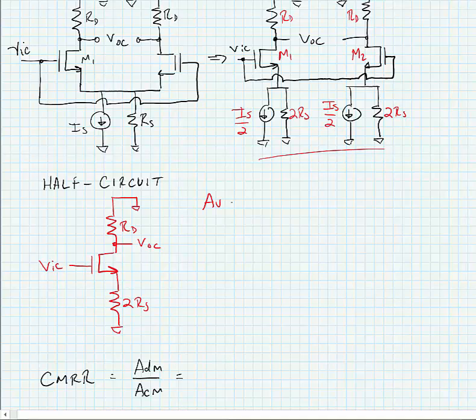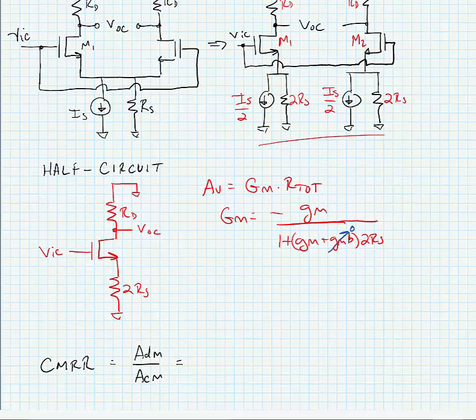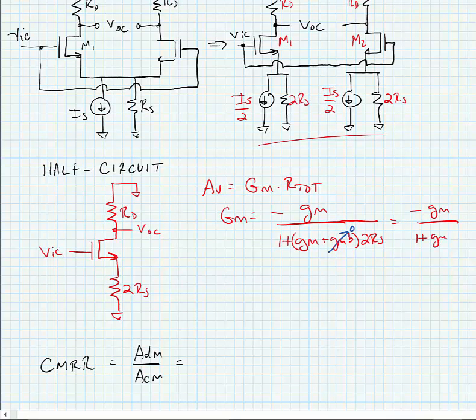Now we know that our voltage gain is equal to big GM times our total RTOT and we know that big GM in this case is equal to minus gm divided by one plus gm plus gmb times RS. We're going to ignore the gmb term here, so we're simply left with minus gm divided by one plus gm times 2RS.